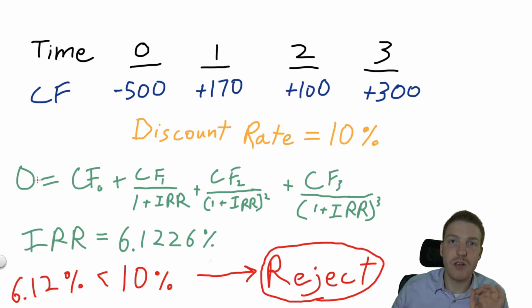We're going to use our IRR calculation: zero equals cash flow at time zero plus cash flow at time one divided by one plus IRR, plus cash flow at time two over one plus IRR squared. The IRR is actually 6.1226%. You have to use a financial calculator to get this number. You're not going to be able to do this by hand.